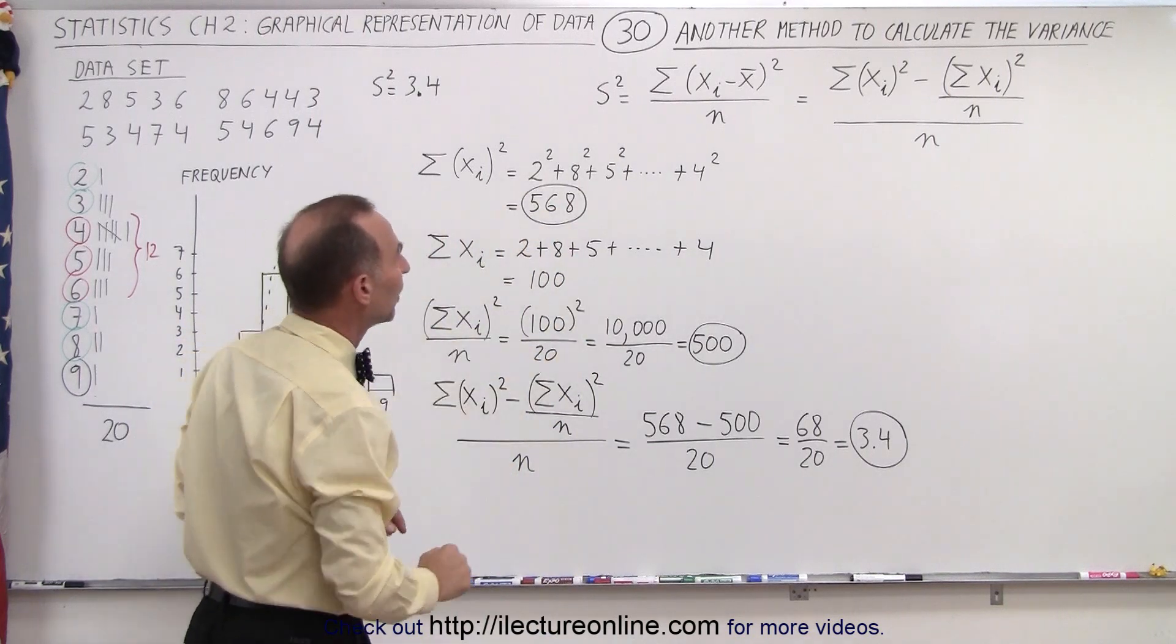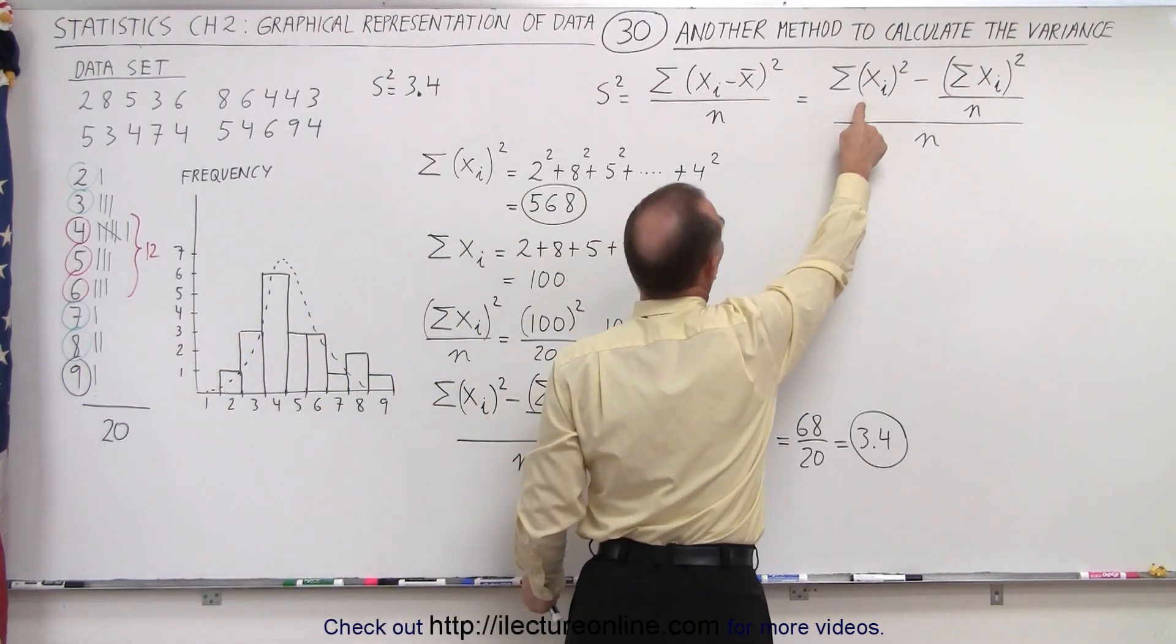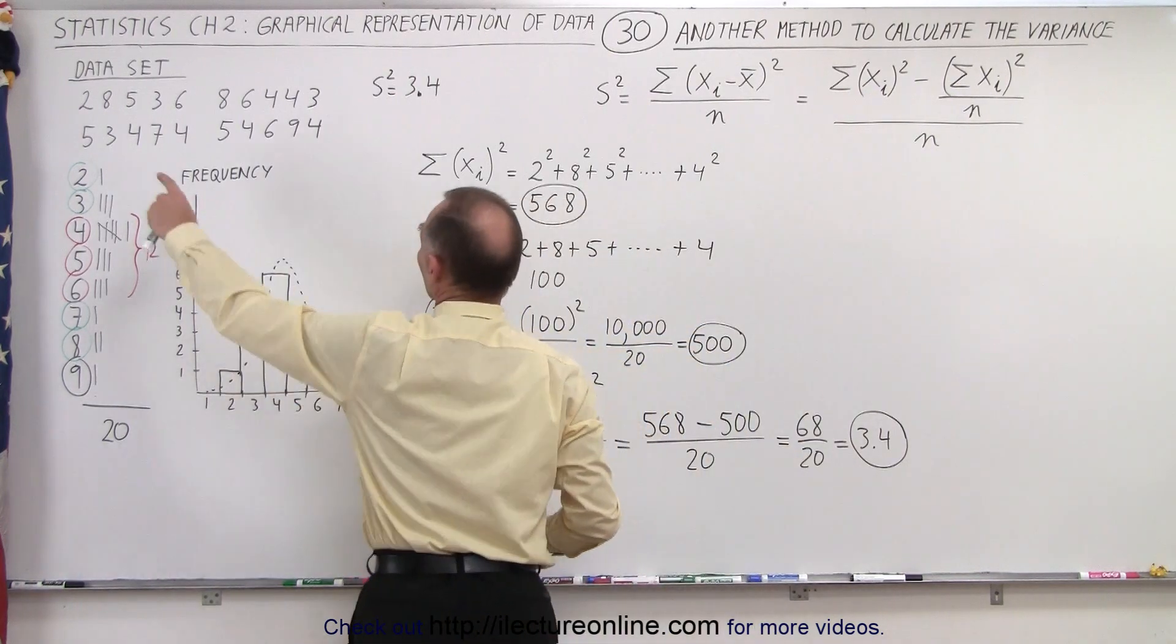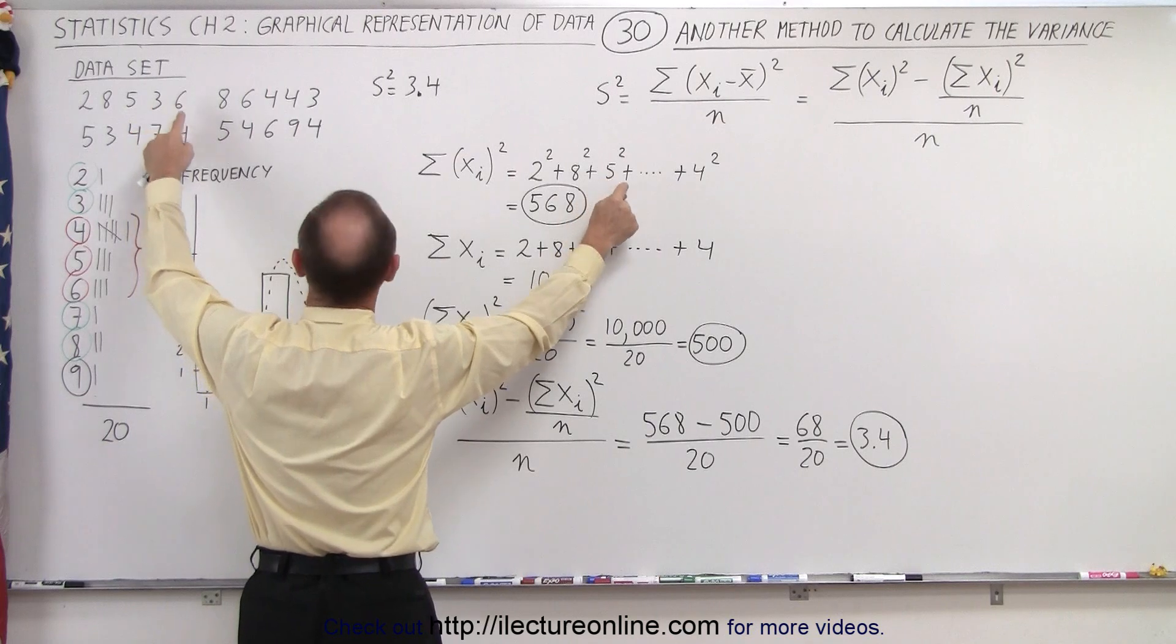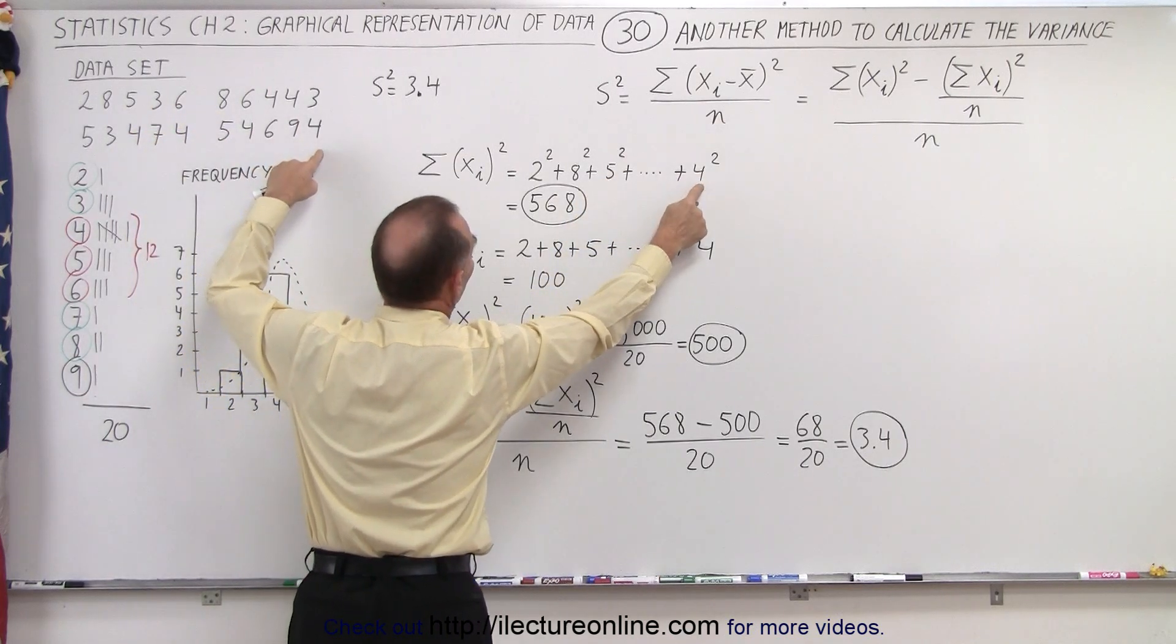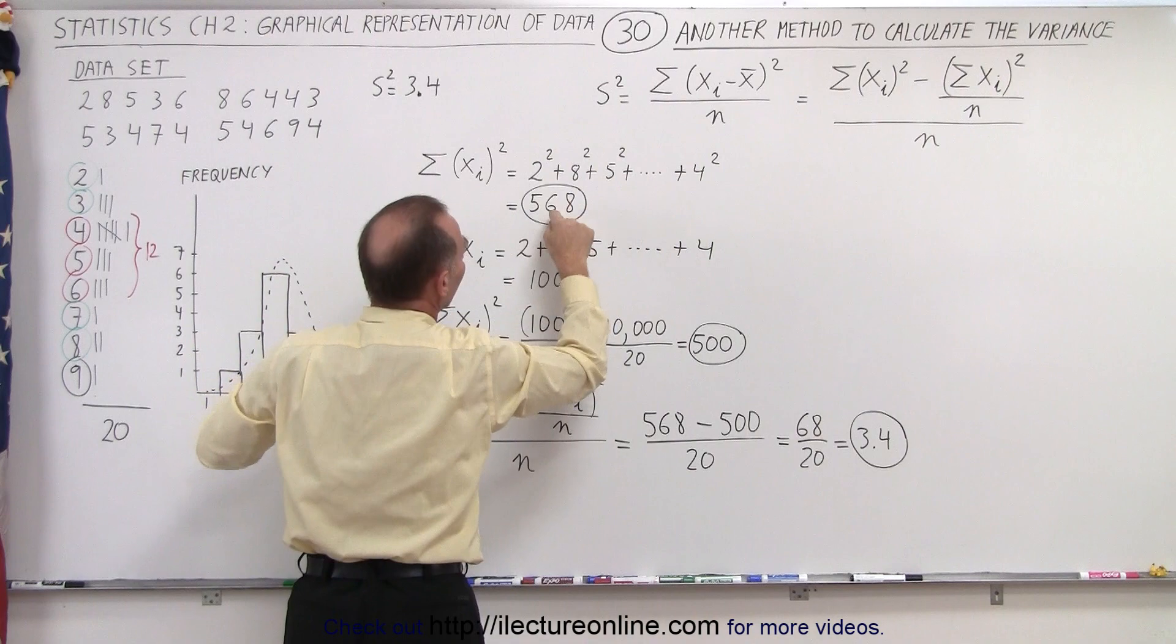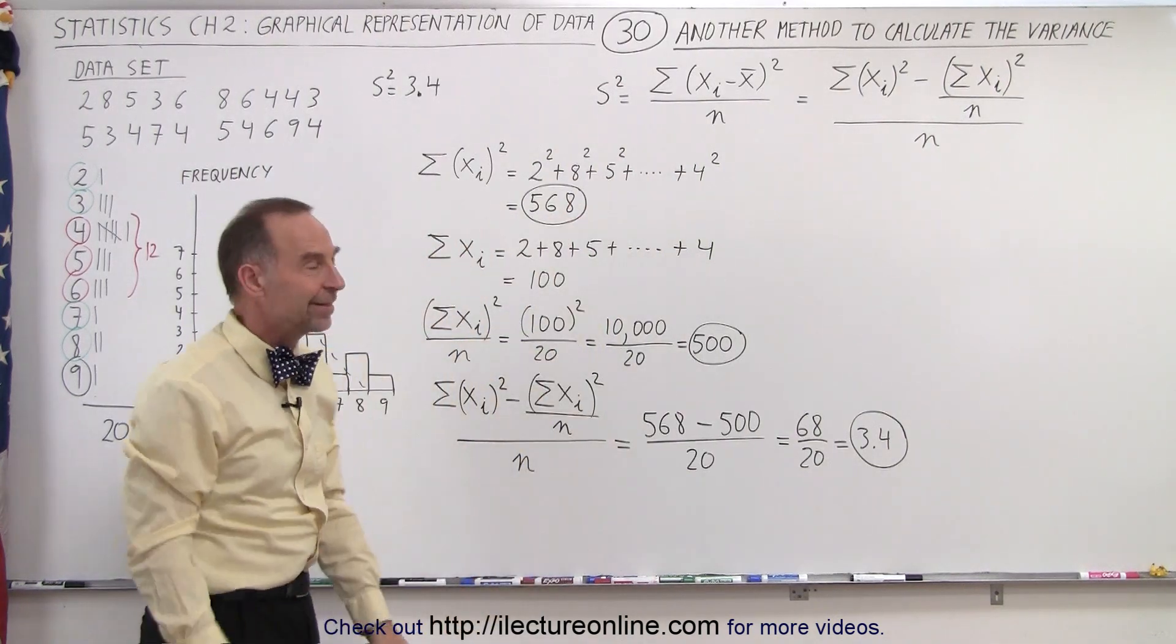Now here we have it all worked out. For the first term, we're going to sum the square of all the data points. Here are the data points - we take 2 squared plus 8 squared plus 5 squared plus 3 squared, and so forth, all the way to 4 squared. Add them all up, that's what the sum means, and we get 568.